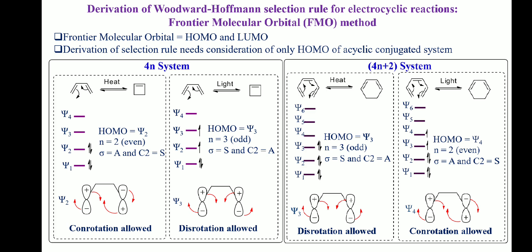In a 4N+2 pi system, the case is reversed. Under thermal conditions, the HOMO has a plane of symmetry, so the allowed rotation is disrotation. Under photochemical conditions, the HOMO has a C2 axis of symmetry, so the allowed rotation is conrotation.